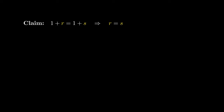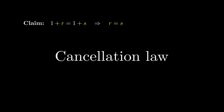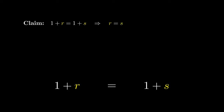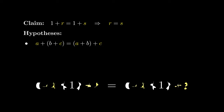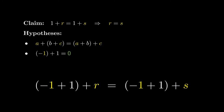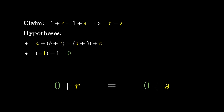This helps us prove that if we have an expression 1 plus r equaling 1 plus s, we can cancel the ones. This is known as the cancellation law. We start with the equation 1 plus r equals 1 plus s, and add negative 1 on both sides. Since addition is associative, we can shift the brackets. Since negative 1 is the additive inverse of 1, adding negative 1 to 1 gives 0, and since 0 is the additive identity, 0 plus any number remains as that number. This proves r equals s — the cancellation law for addition.